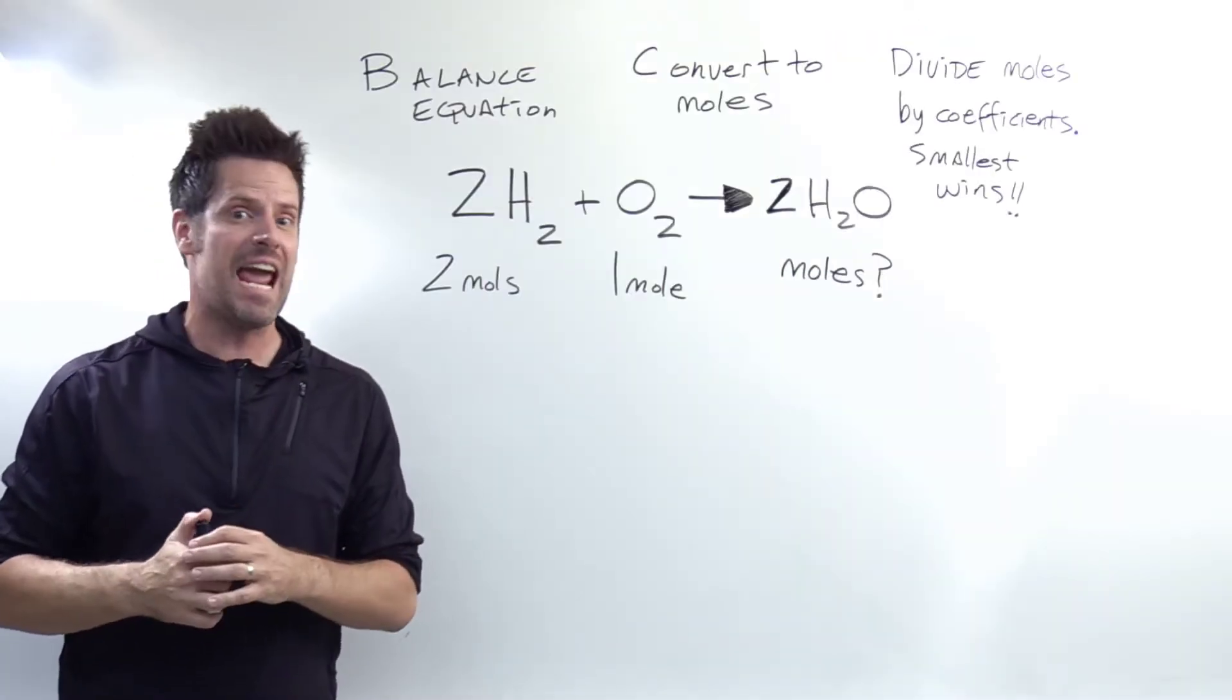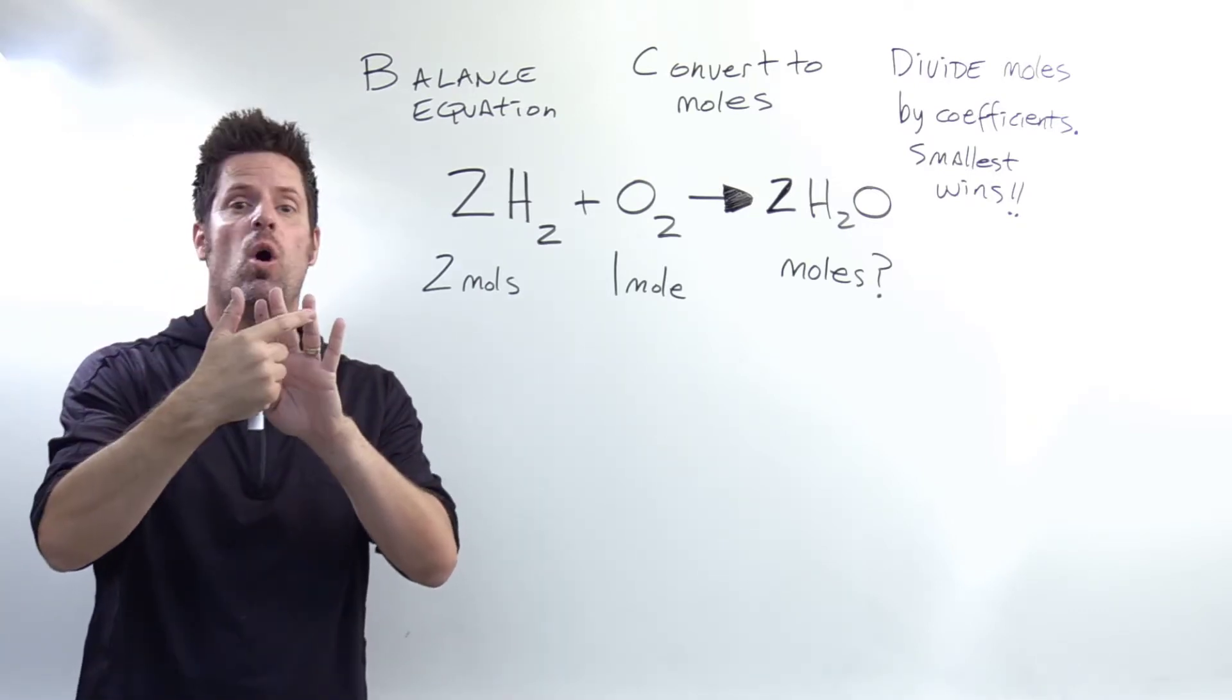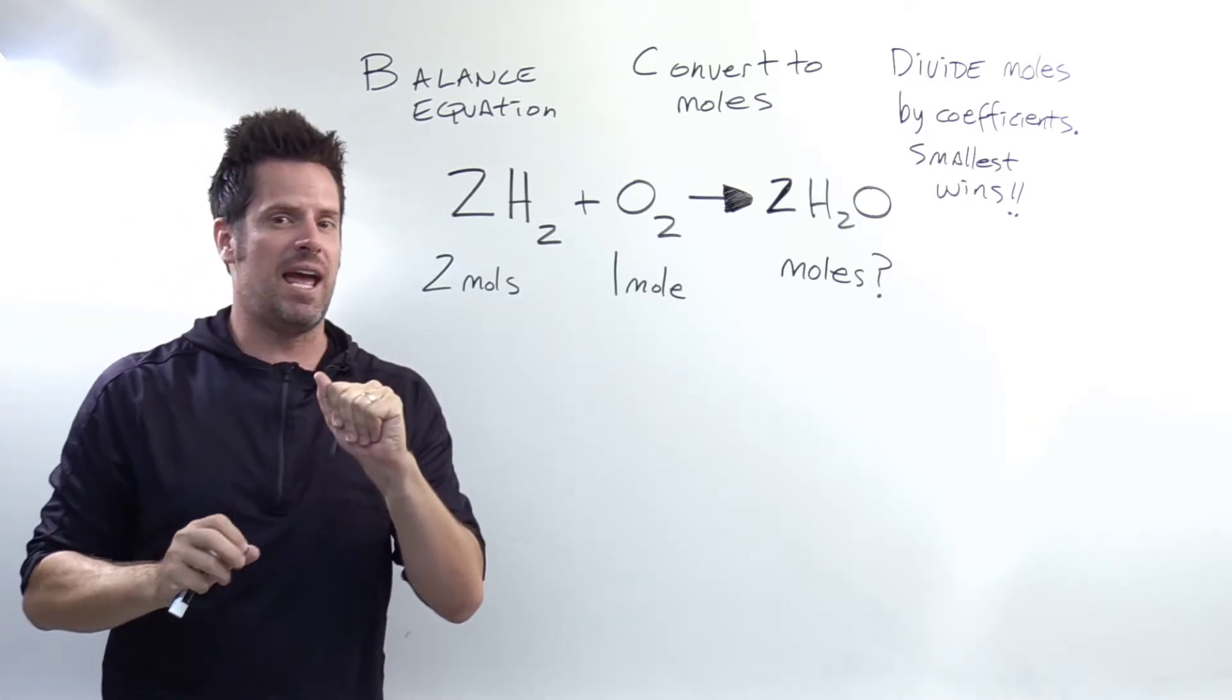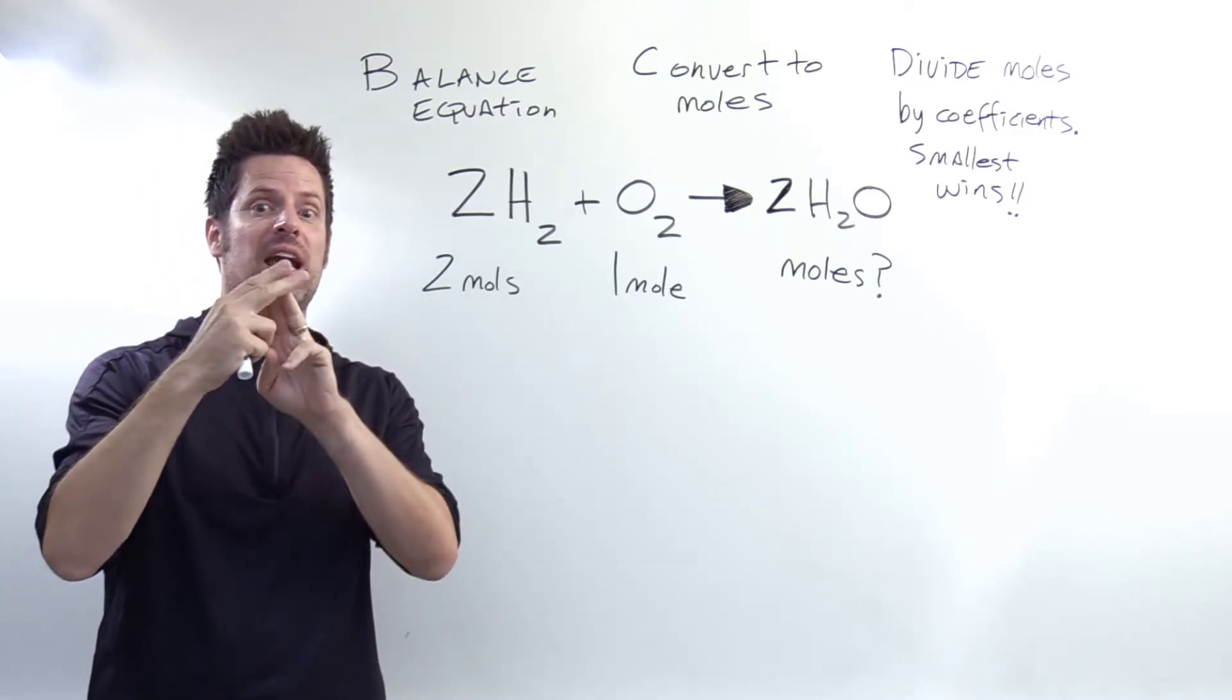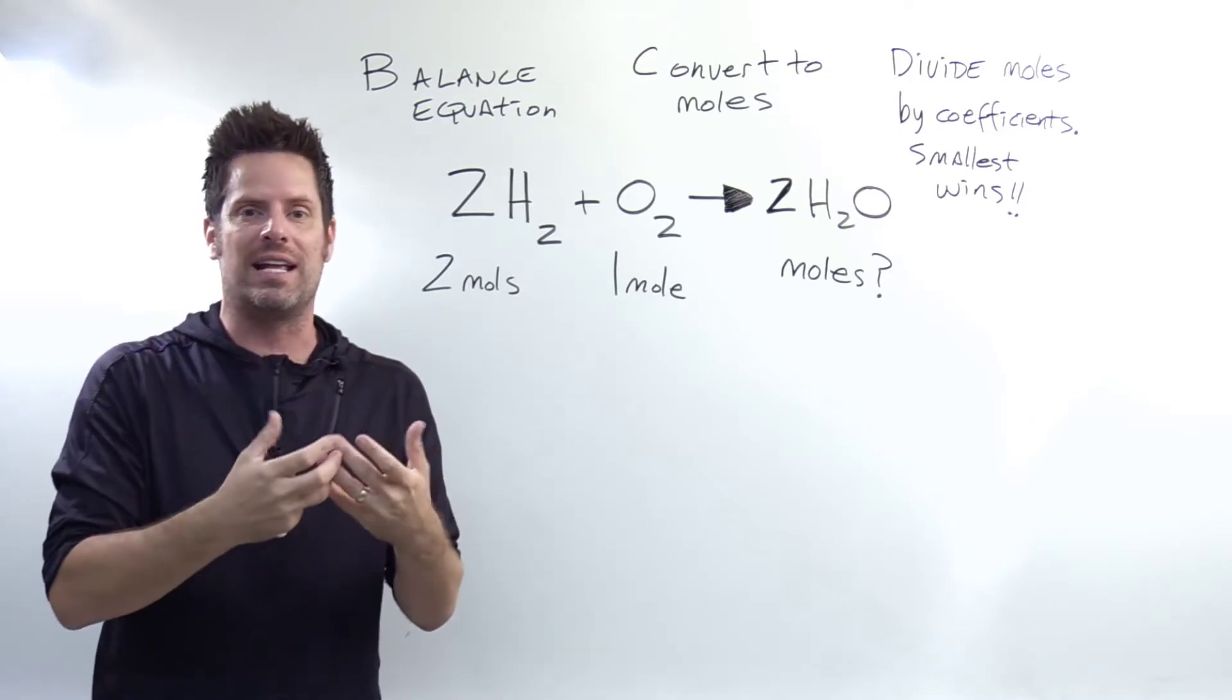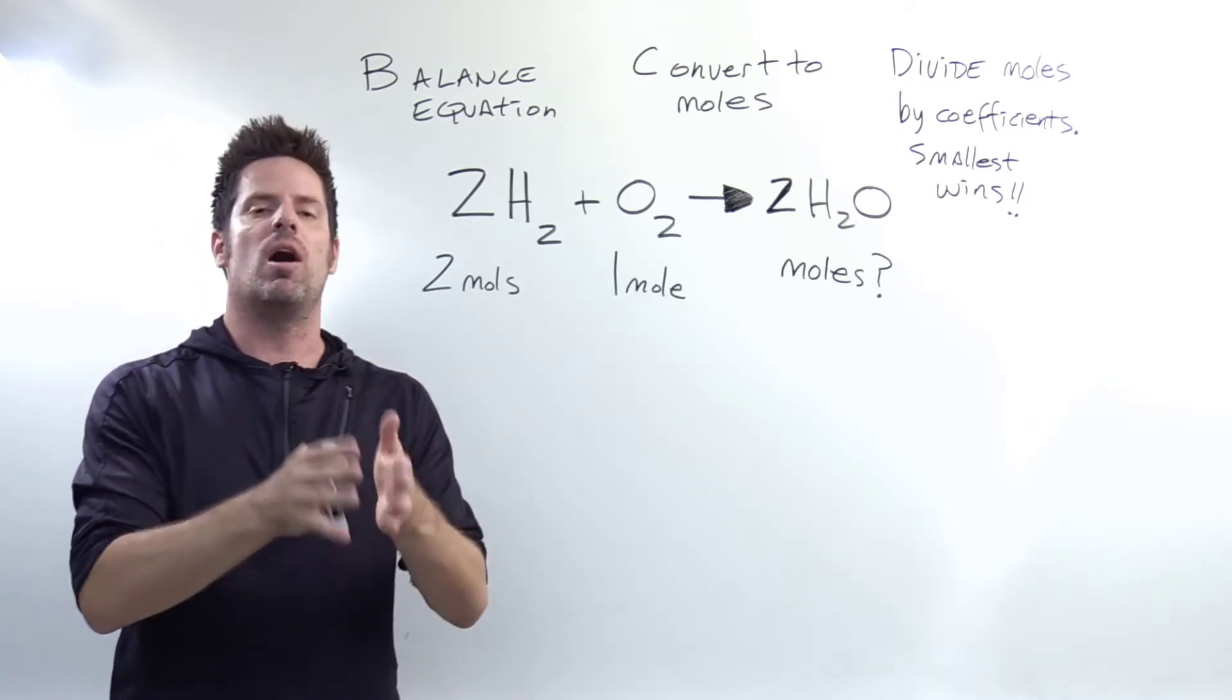Let's imagine we were trying to make a cake with a simple recipe with only four ingredients: flour, sugar, oil, and eggs. Let's pretend in this scenario that we had an unlimited, infinite amount of three of those ingredients except for eggs. Could you make an infinite number of cakes? Obviously not.